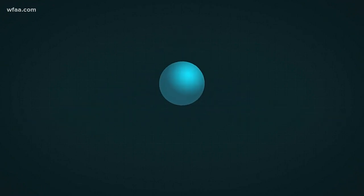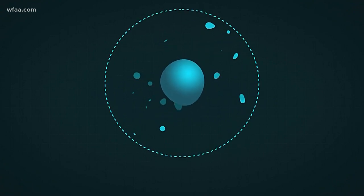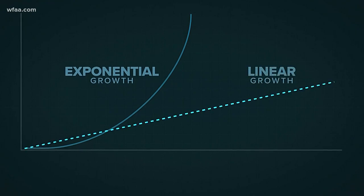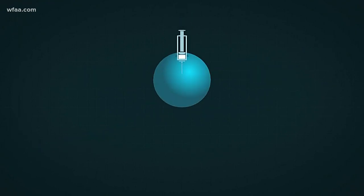As others do the same, social distance and limit interactions, the contagion slows. Exponential growth turns into linear growth. Cases increase, but at a much more manageable rate.